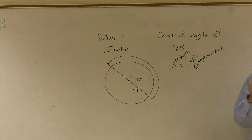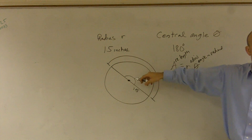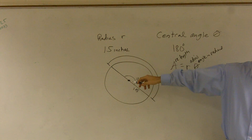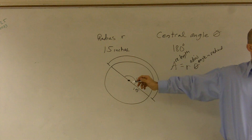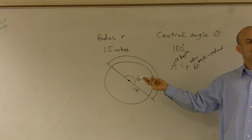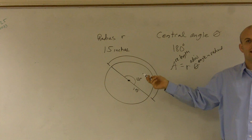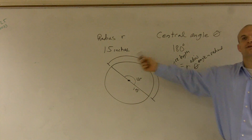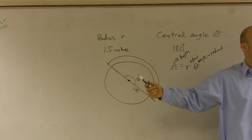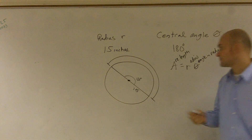So we're doing our arc length, we've got to make sure it's in radians. I'm given 180 degrees — that's degrees — so I need to change that to a radian. 180 degrees is pi radians.